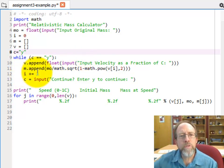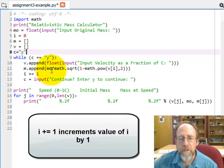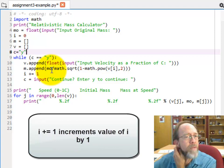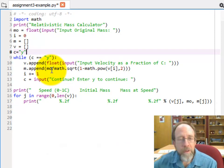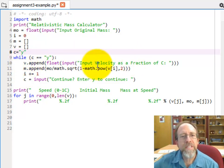Then, i plus equals 1. Well, that in Python is the increment operator. For those who've used other languages, might be used to the plus plus. There is no plus plus operator in Python. But there is a plus equals 1, which is essentially an operator that adds 1 to whatever i is. So after it does this input, and does this calculation, it's going to increment the i.